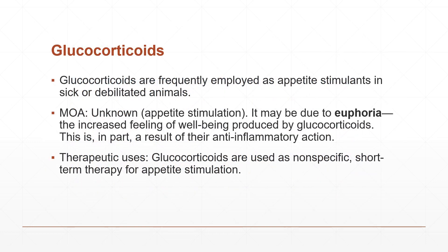Another group of appetite stimulant drugs are the glucocorticoids, also known as corticosteroids. They are frequently employed as appetite stimulants in sick or debilitated animals. The mechanism of appetite stimulation is considered unknown and has been attributed to euphoria — the increased feeling of well-being produced by glucocorticoids.